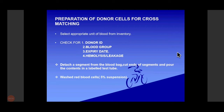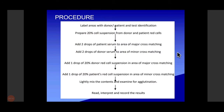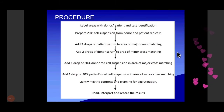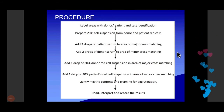In major cross-match, donor red cells are tested with patient serum. In minor cross-match, patient red cells are tested with donor serum. The principle is to detect any serological incompatibility. For preparation, we select an appropriate unit of blood from inventory, check for donor ID, blood group, expiry date, hemolysis or leakage. We add two drops of patient serum in major and two drops of donor serum in minor cross-matching, then examine for agglutination.